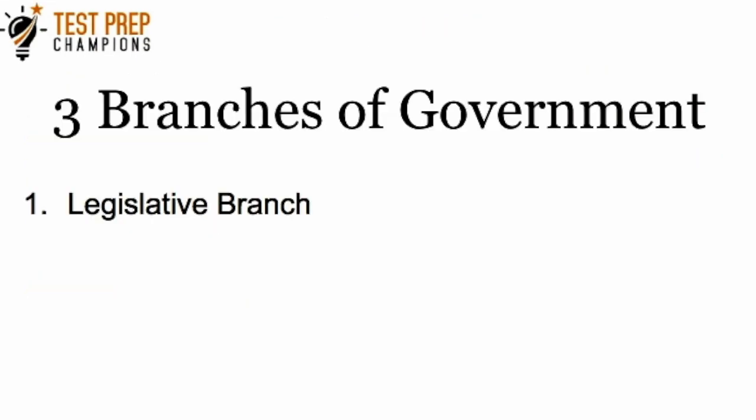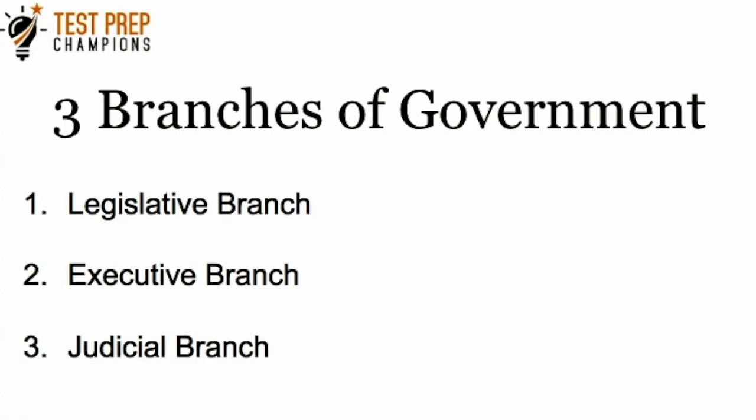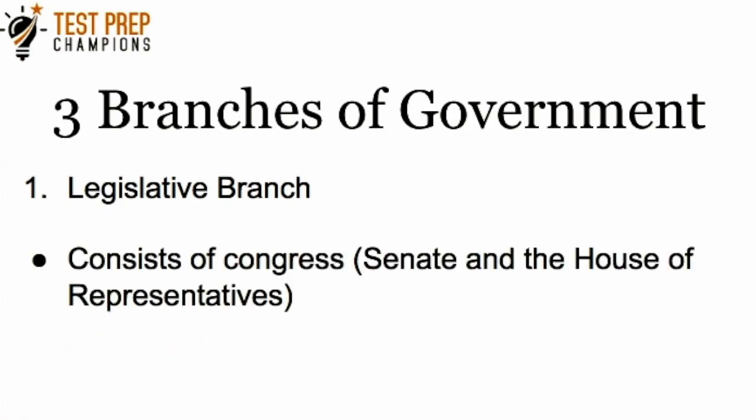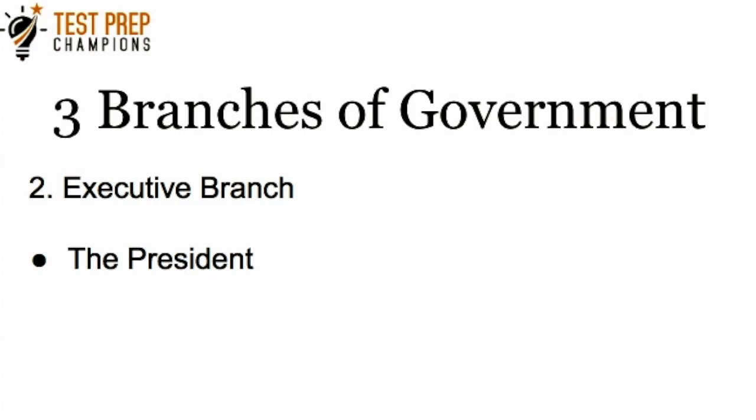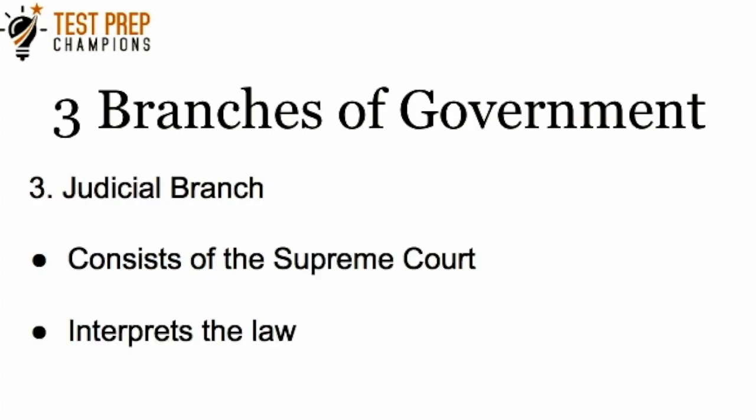There are three branches of government: the legislative branch, the executive branch, and the judicial branch. The legislative branch consists of Congress, which is made up of the Senate and the House of Representatives. The executive branch includes the president. The judicial branch consists of the Supreme Court and basically interprets the law. This is a simplified version of what you should know for the GED test.